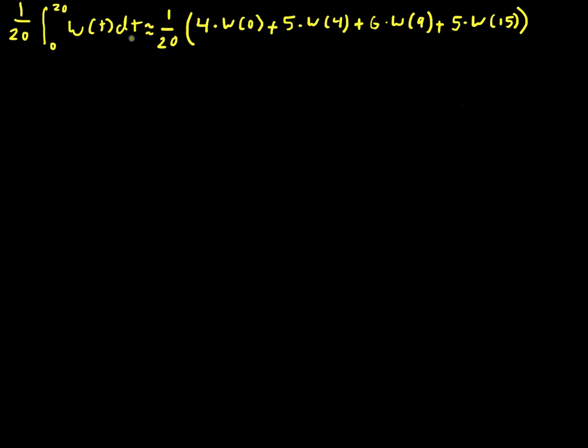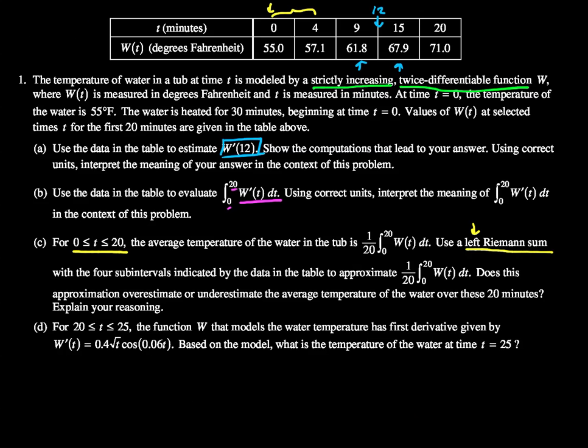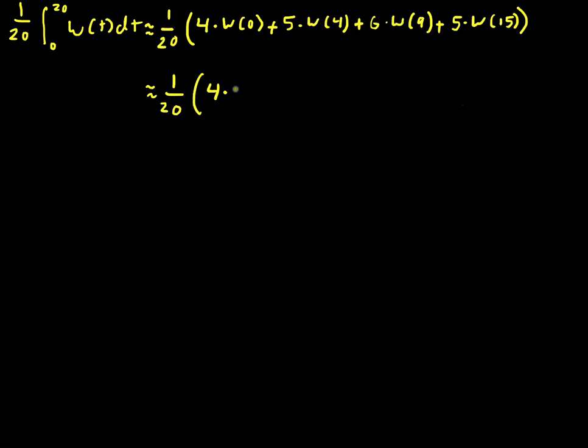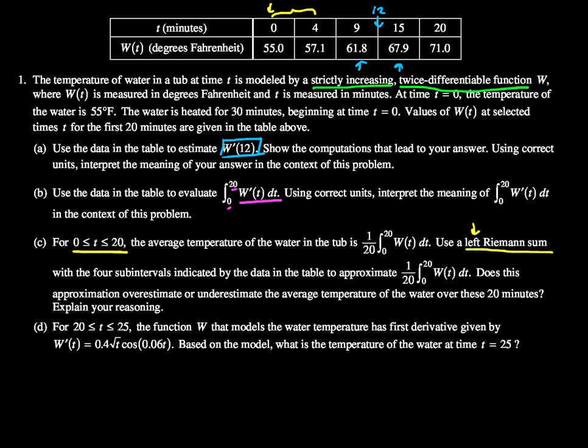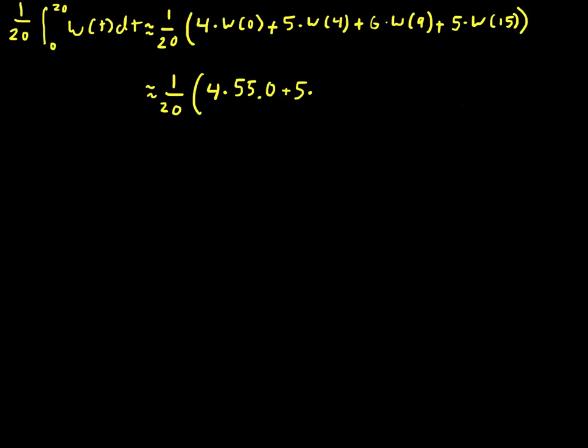Okay, and so that will then get us to 1 over 20 multiplied by 4 times, I believe that was 55, yep, 55.0.